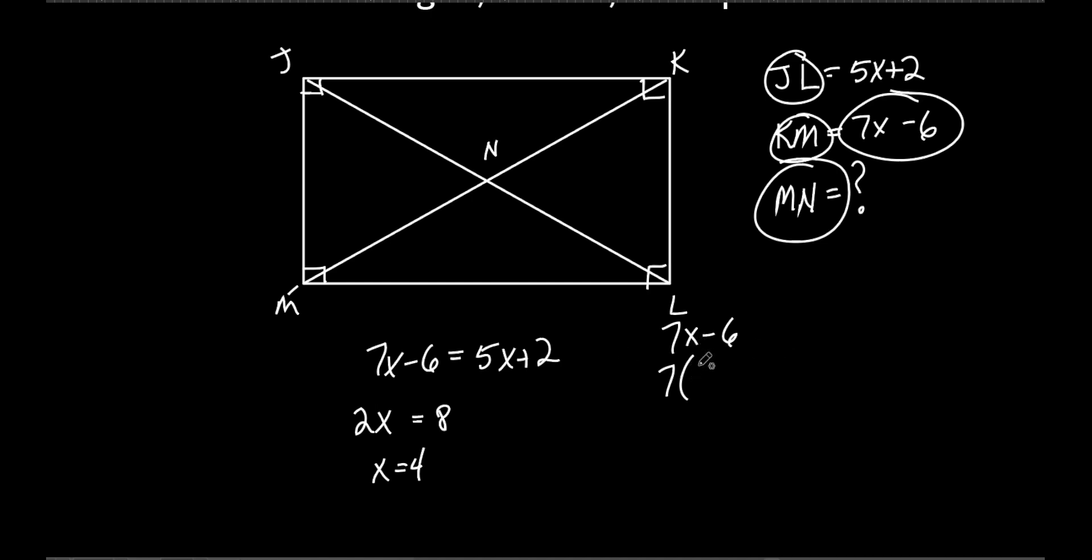Exactly right. So MN is how much of MK or KM? It's half of it. So I'm trying to find what KM is and then I just take half of it. So let's put it in here. What is x? It's 4. Minus 6. That's 28 minus 6 is 22. Now what's 22? This whole thing right there is 22. What am I asking to find? MN, which is how much of that? Half of it. So what's 22 divided by 2? It's 11. So MN, that little bit right there, is 11.